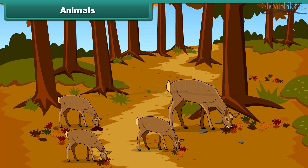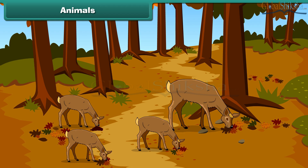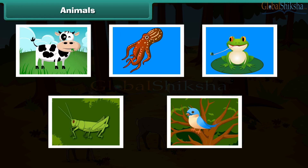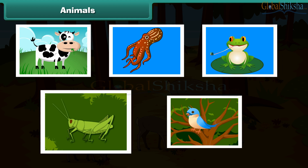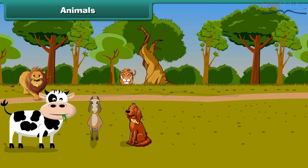Friends, as we all know, animals are living organisms. They can move and grow. They have the ability to produce their own young ones. We can see different animals all around the world. They are in various sizes, shapes and colors. There are different types of animals living on this planet: land animals, water animals, amphibians, insects and birds. Let us know more about them. The animals that live on land are called land animals.